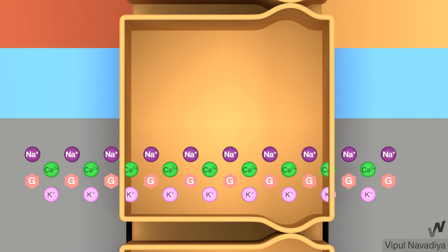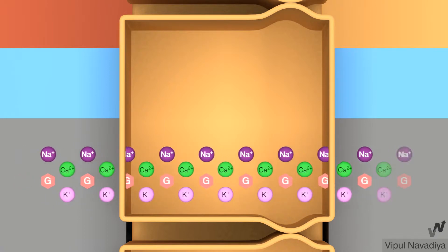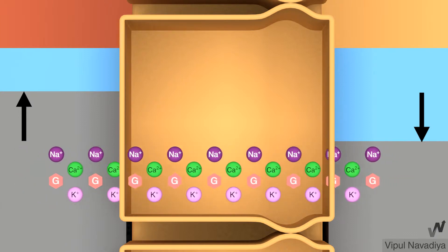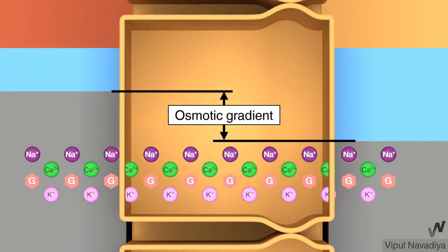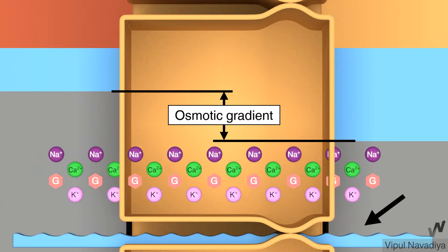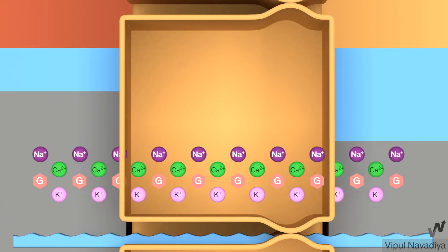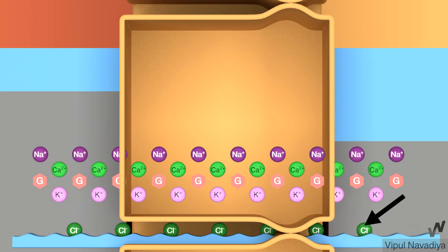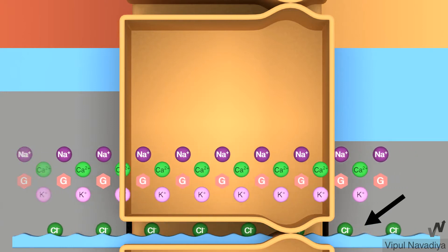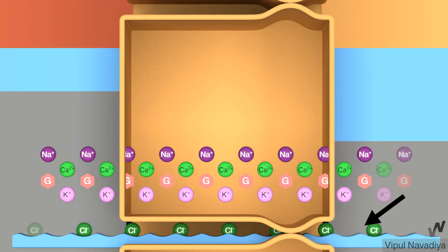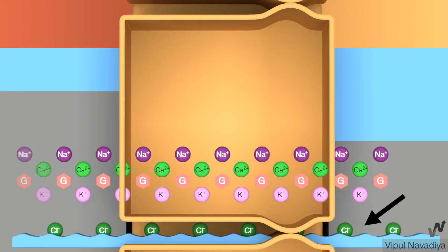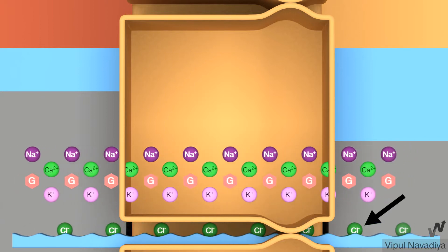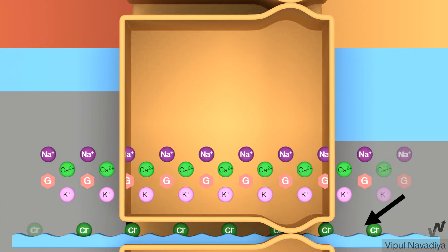Second, solvent drag. Active reabsorption of sodium and other solutes tends to decrease their luminal concentration and increase interstitial concentration. This creates an osmolarity difference that causes osmosis of water from lumen into the interstitium, occurring by both transcellular and paracellular routes. Water moving by the paracellular pathway carries solutes dissolved in it. Reabsorption by this process is referred to as solvent drag, and many solutes including chloride are reabsorbed in this way.